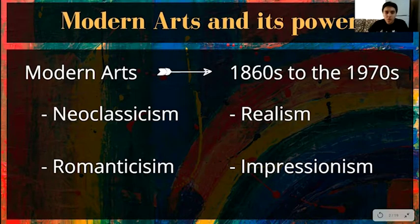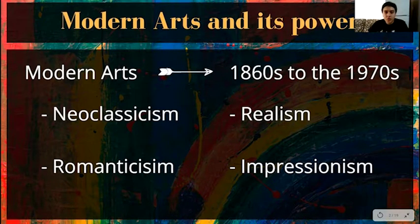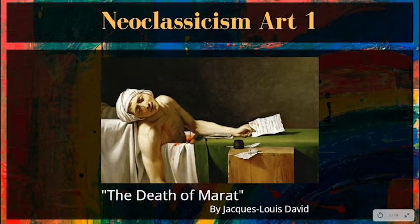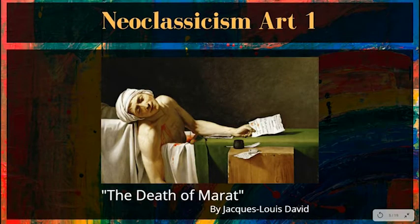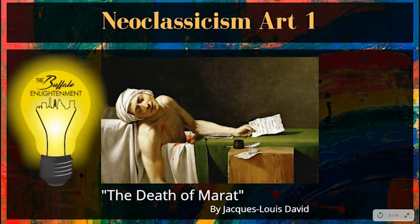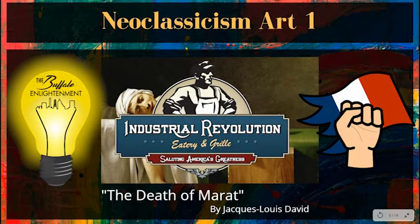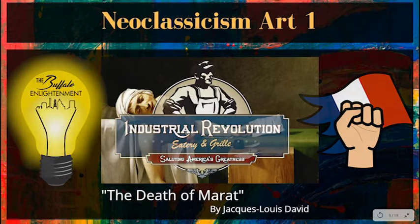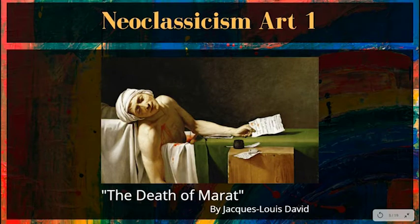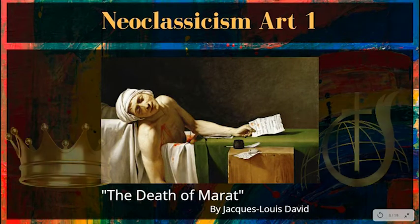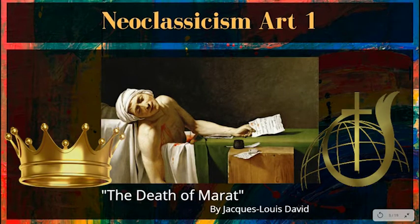Now we share with you our recreations. I hope you like it and that you enjoy our presentation. To begin with, Neoclassicism had the influence of the Enlightenment, the French Revolution, and the Industrial Revolution. It opposed the baroque art, which expressed the greatness of dominant institutions such as the monarchy and the church.